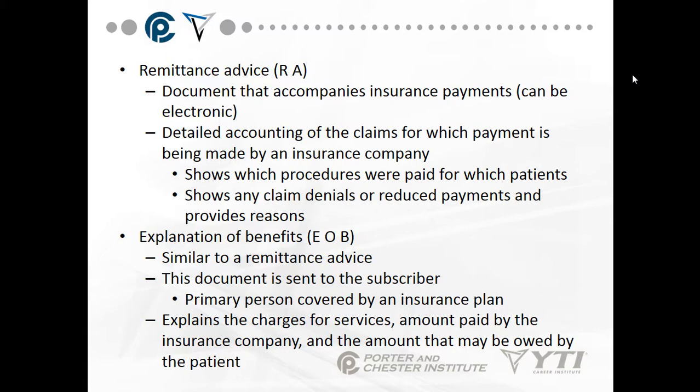An explanation of benefits (EOB) is similar to a remittance advice but is sent to the subscriber — the primary person covered by the insurance plan. If you have five family members and you provide the insurance, you are the subscriber. The EOB explains the charges for service, the amount paid by the insurance company, and the amount that may be owed by the patient or the balance being written off.